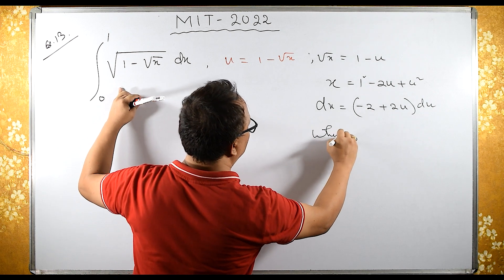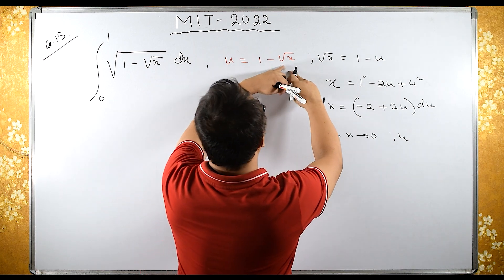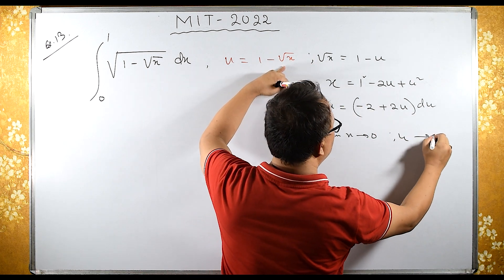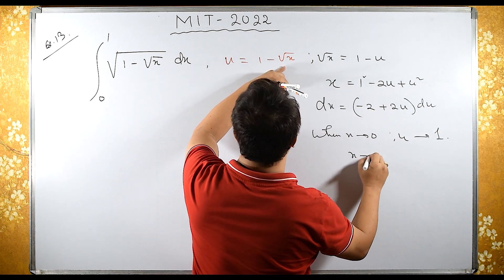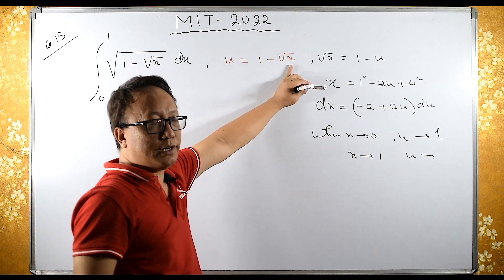Now let's change the limit. When x tends to 0, u becomes 1. When x tends to 1, square root of 1 is 1, so u tends to 1 minus 1, which becomes 0.